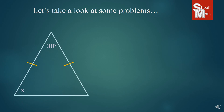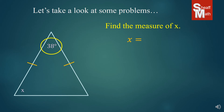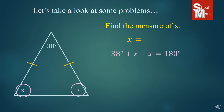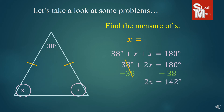Let's take a look at this one. We have our isosceles triangle and we're asked to find the measure of X. The angle 38 is not one of the base angles, so X is one of the base angles and the other unlabeled angle is also a base angle — they're the same. So we put X there too. We add up all the angles to make 180 degrees: 38 plus X plus X equals 180. Adding like terms and subtracting 38 gives 2X equals 142, then dividing by 2 gives X equals 71 degrees. So both base angles are 71 degrees.